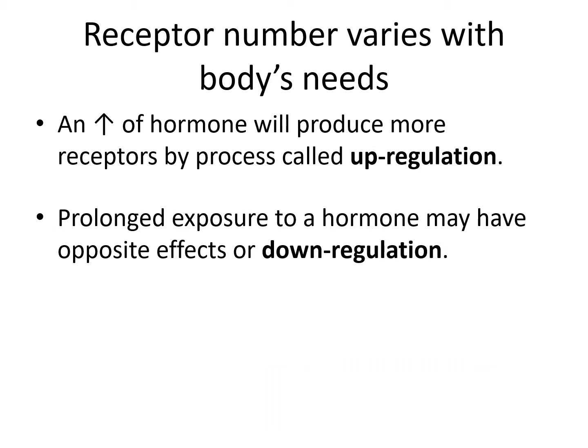Receptor number doesn't always stay the same — it may vary depending on the needs of the body. If there's an increase in a hormone being secreted, receptors may respond by increasing their numbers in a process called upregulation. Likewise, if there's prolonged exposure to a hormone, the cell may become desensitized and receptors will decrease in number, called downregulation.